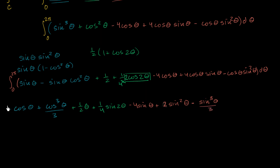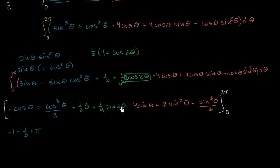We need to evaluate this entire expression between 0 and 2 pi. Evaluating at 2 pi: negative cosine(2π) gives negative 1; cosine cubed(2π) over 3 gives one third; one half times 2π gives pi; one fourth sine(4π) is 0; and all remaining sine terms evaluated at 2π are 0. So that's a nice simplification — everything evaluated at 2 pi.